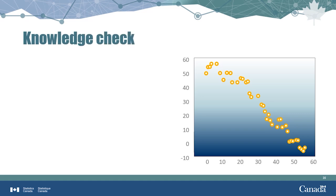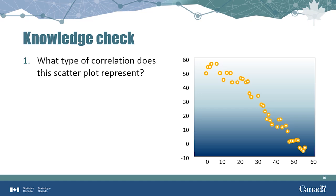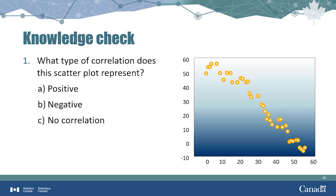Let's take a break to test your knowledge about correlation. Take a look at the scatterplot on the right-hand side of the slide. What is it telling us? Is there: A, a positive correlation between these two variables; B, a negative correlation; or C, no correlation at all?